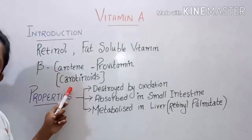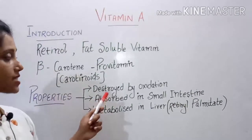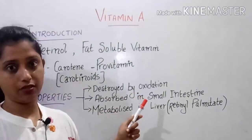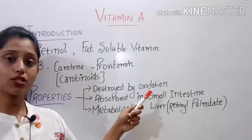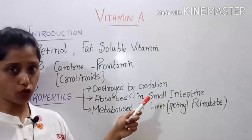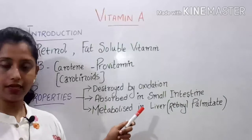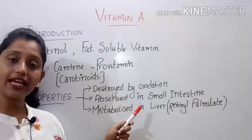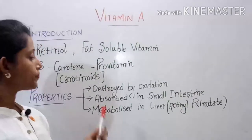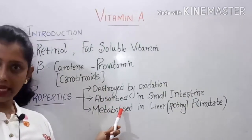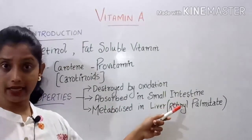The properties of Vitamin A: Vitamin A is destroyed by oxidation — that means in the presence of oxygen it can get destroyed. Vitamin A can withstand heat up to 100 degrees Celsius.